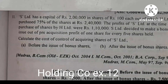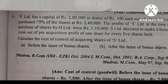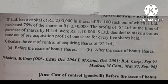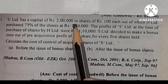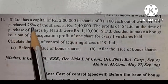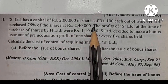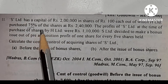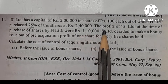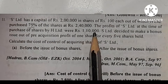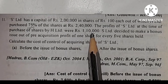Welcome to Healthy Education. We are going to talk about holding company accounts, Exercise 11. YES Limited has a capital of ₹2 lakhs in shares of ₹100 each, out of which Hedge Limited purchased 75% of shares at ₹2,40,000. The profit of S Limited at the time of purchase of shares by Hedge Limited was ₹1,10,000, that is capital profit.